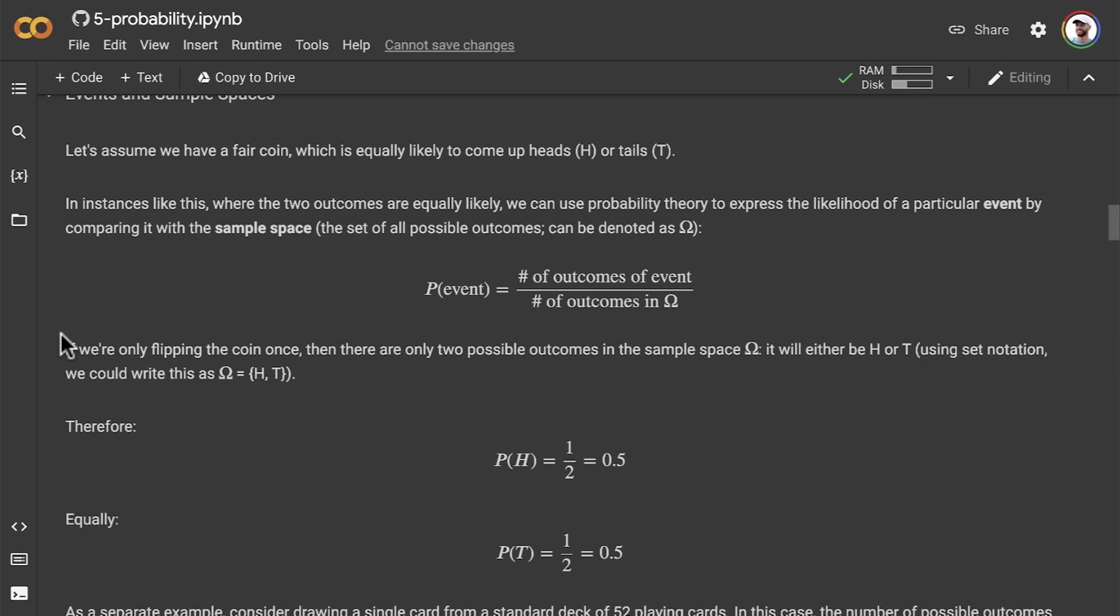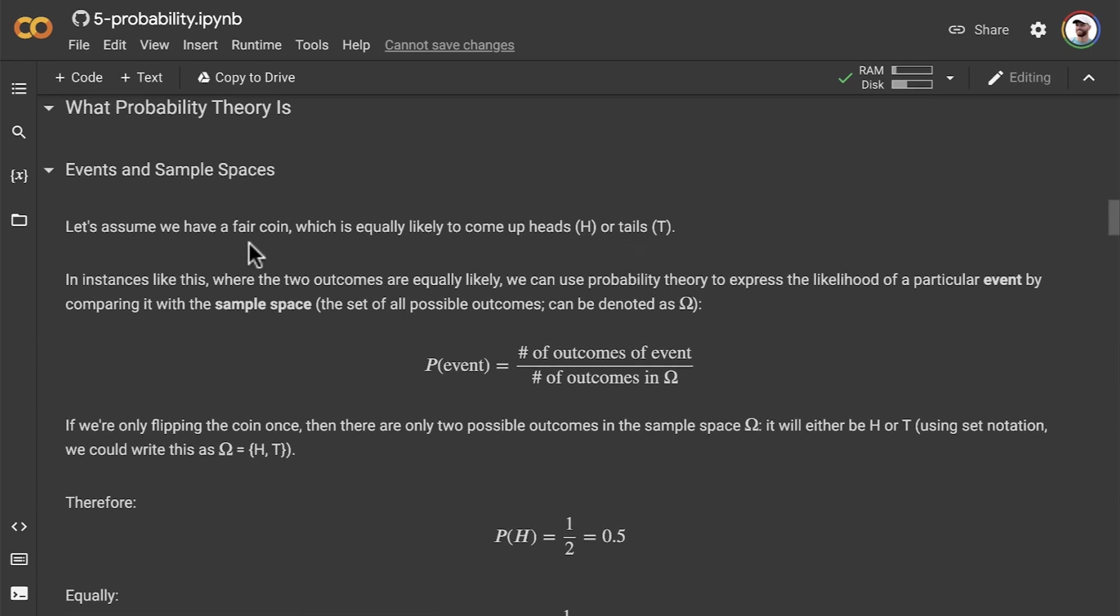To explain what these concepts are, let's assume that we have a fair coin that has a head side or a tail side, and it being fair means there's a 50-50 chance that it will come up heads or tails on a given coin flip. In instances like this, where the two outcomes are equally likely, we can use probability theory to express the likelihood of a particular event by comparing it with the sample space.